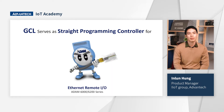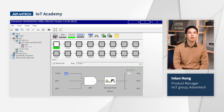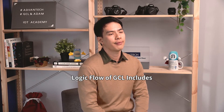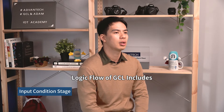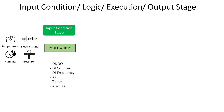GCL serves as a straightforward programming controller in Advantech Ethernet Remote I/O, ADAM 6000 and 6200 series. A key feature of GCL is that everyone can use it — you don't need to write code. With a simple setting, you can control the I/O module, and with the graphic user interface, it is easy to check the flow. The graphic flow in GCL is composed of four stages: input condition stage, logic stage, execution stage, and output stage. The input condition means a logic condition decision based on input data — it can be logic true or false.